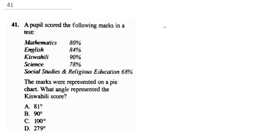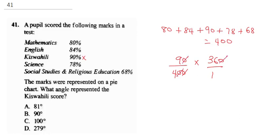A pupil scored the following marks in a test. When you sum up the scores, it's 80 plus 84 plus 90 plus 78 plus 68, which gives 400. We're looking for Kiswahili, so this is 90 over 400 multiplied by 360 degrees for the circle. Canceling, 9 times 9 equals 81 degrees. The correct answer is A.